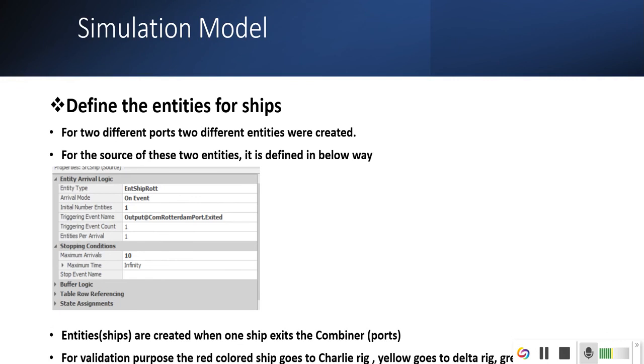Define entities for ships. Entities are also defined and it contains one state variable: where should we go. Once a ship exits from the combiner, it creates another entity ship. For the validation purpose, red color ship goes to Delta rig, yellow color goes to Charlie rig, and green goes to Alpha and Beta.